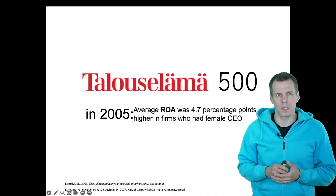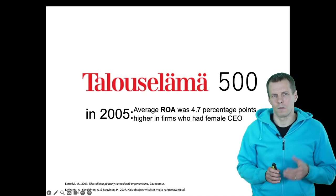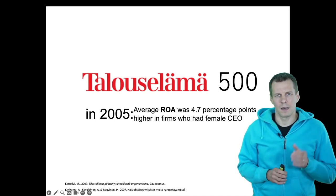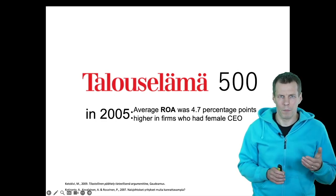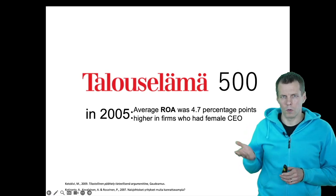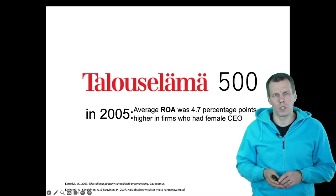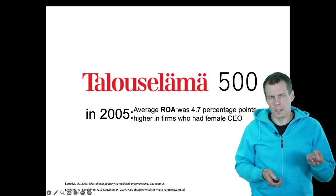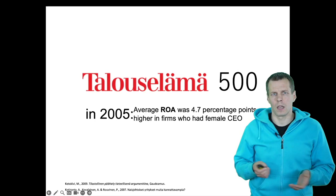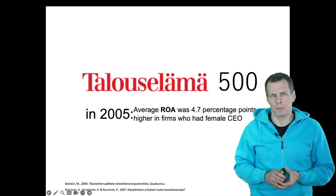The example is this: every year Talouselämä publishes the list of 500 largest companies, and in 2005 they published the list and did an analysis where they compared men and women-led companies. They concluded that the return on assets of the women-led companies was 4.7% higher than for the men-led companies — a large difference given that the average ROA in the sample is just over 10%.